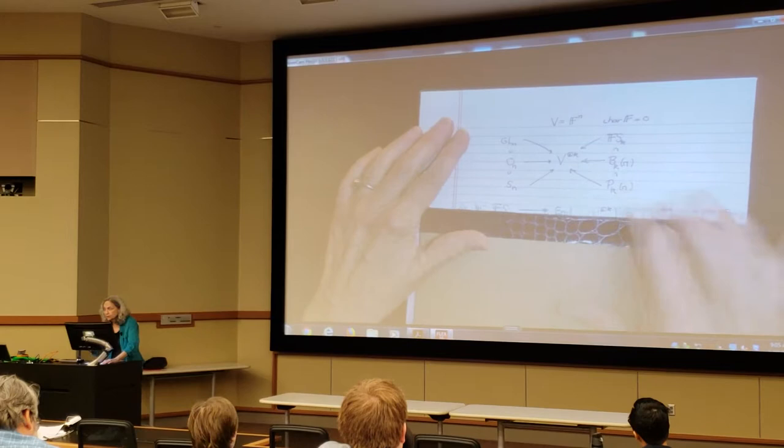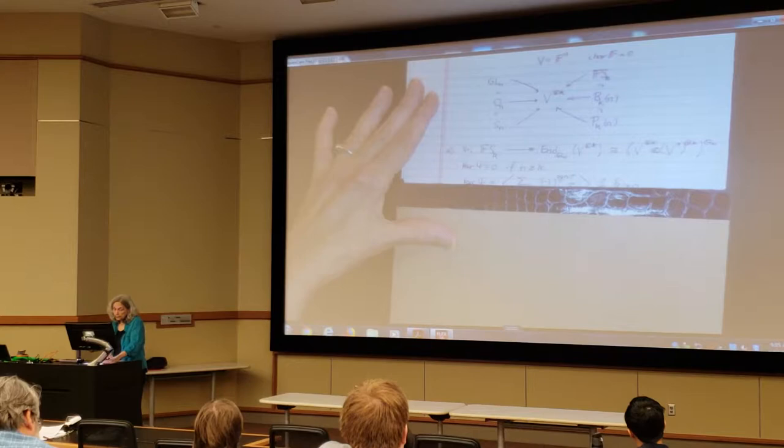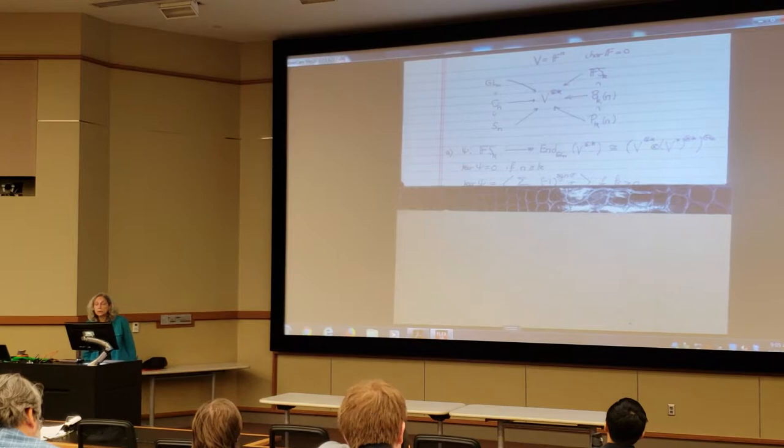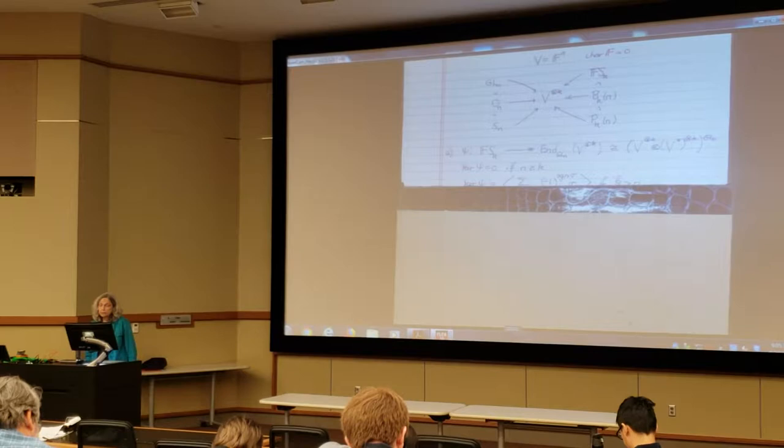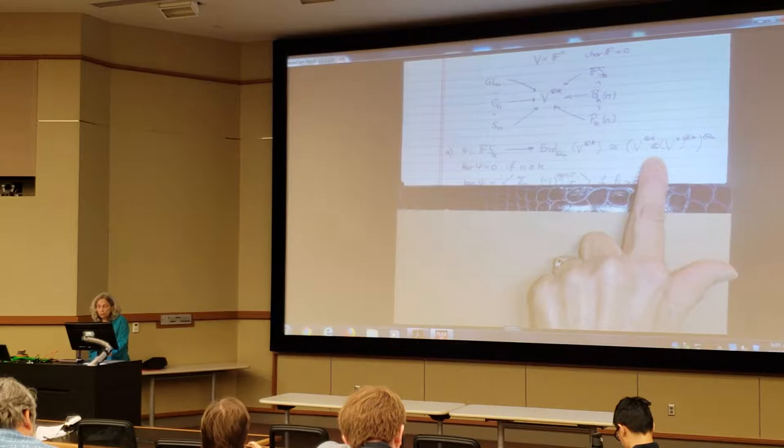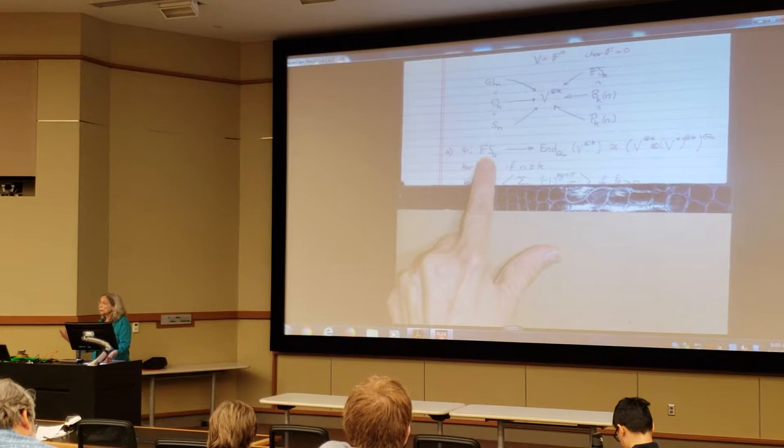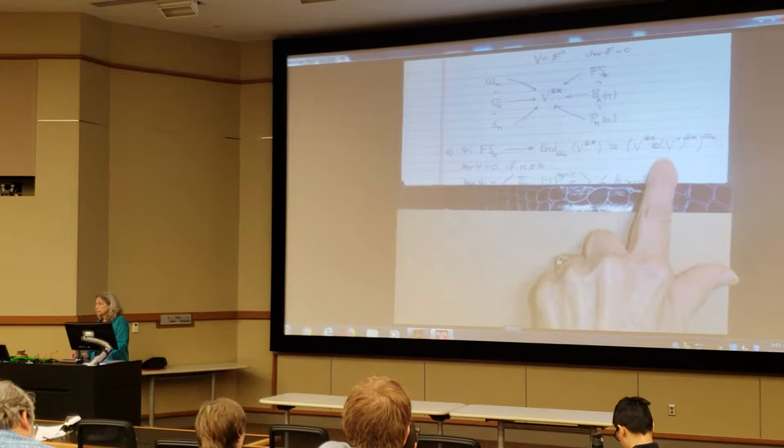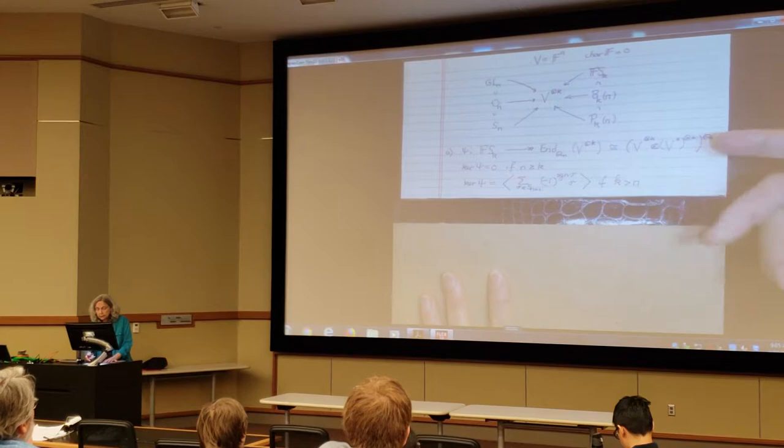These are the homomorphisms we had. In the first case, this is the action of the group algebra, the symmetric group, acting on V tensor K. And that centralizer algebra, that endomorphism algebra, is actually the invariants on the right. So we're saying you can use the group algebra and its generators and relations to describe these invariants. The kernel is zero, so actually you can identify these invariants with this group algebra.